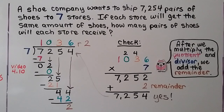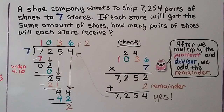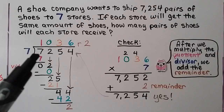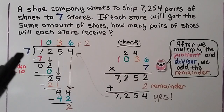A shoe company wants to ship 7,254 pairs of shoes to 7 stores. If each store will get the same amount of shoes, how many pairs of shoes will each store receive? So we need to divide 7,254 by 7.